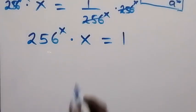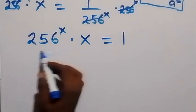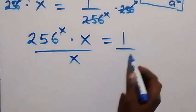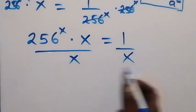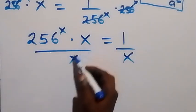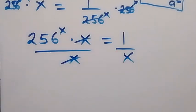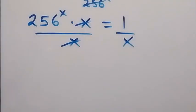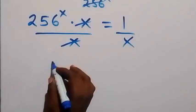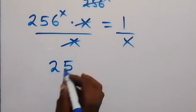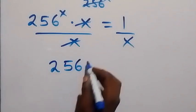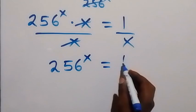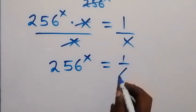So we have 256^x times x equals 1. In the next step, divide both sides by x. These cancel each other, and we are left with 256 raised to the power of x equals 1 over x.